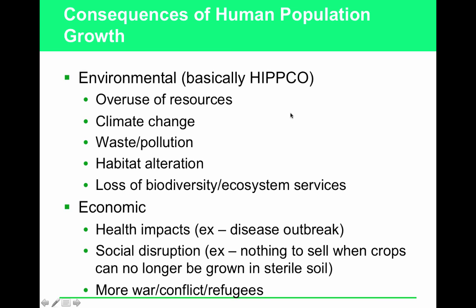Identify environmental and economic consequences of human population growth. Environmental consequences include climate change, waste and pollution buildup, habitat alteration, loss of biodiversity, and loss of ecosystem services. Economic consequences include health impacts on humans and social disruption — for example, an economy can go belly-up if you have nothing to sell when crops can no longer be grown in sterile soil due to poor soil management — and more war, conflict, and refugees. When your land stops giving you food and water, you move or you fight over what's left.